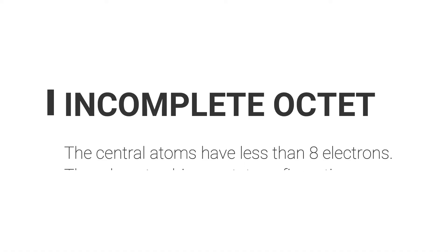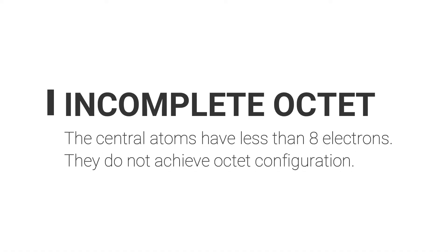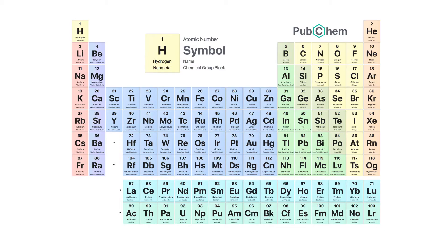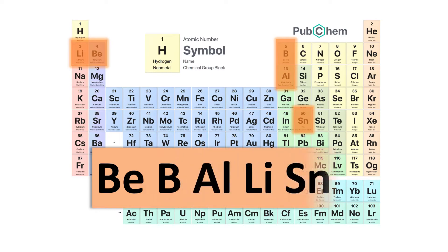The first exception is incomplete octets, which means the central atoms have less than 8 electrons — they do not achieve the octet configuration. The central atoms usually come from group 2 or group 13 in period 2, which means they are light metals. The examples of central atoms are Be (beryllium), B (boron), Al (aluminium), Li (lithium), or Sn (tin). In short form, we can call it 'BeBALLSn'.